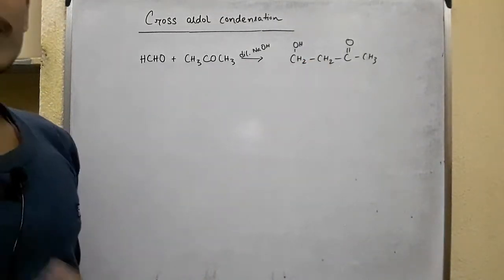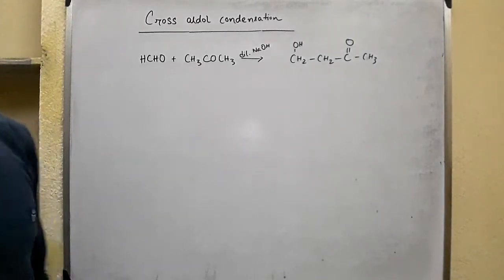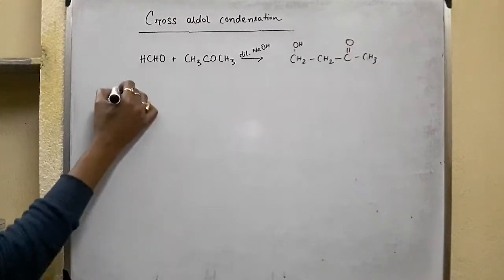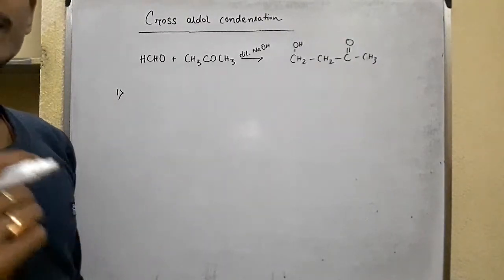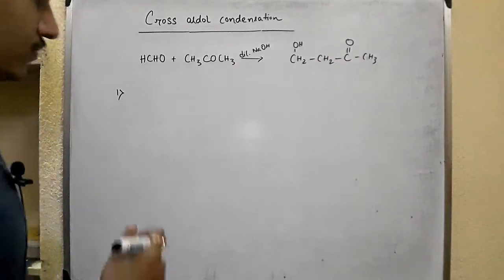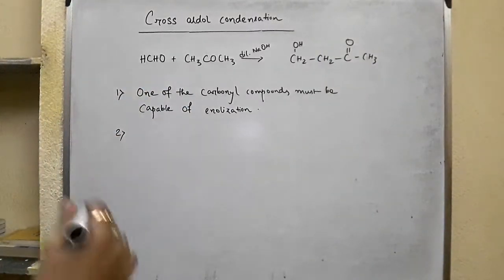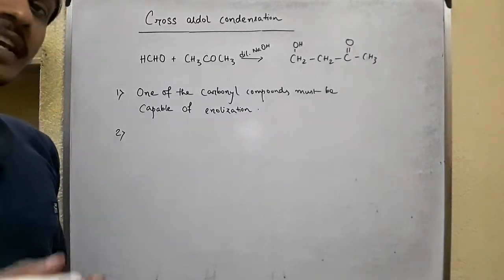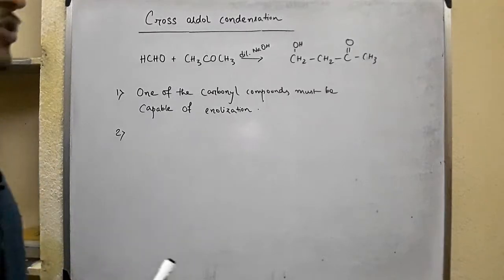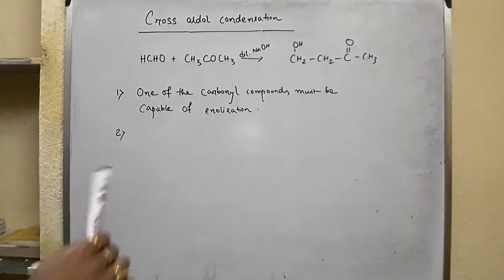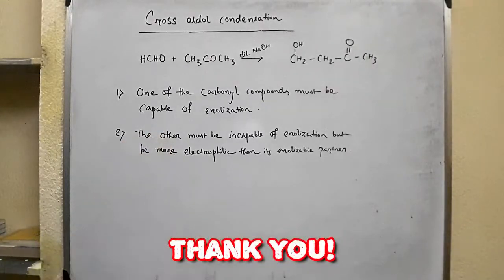So we must have two conditions for cross aldol condensation to work well. First, one of the carbonyl compounds must be capable of enolization. Second, the other carbonyl compound must be incapable of enolization but be more electrophilic than its enolizable partner.